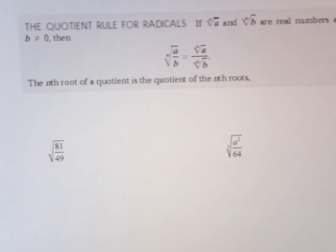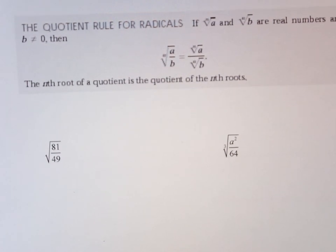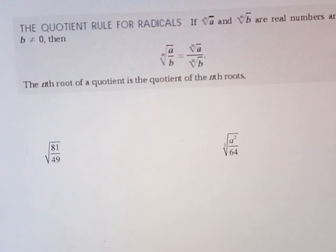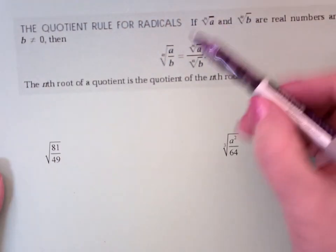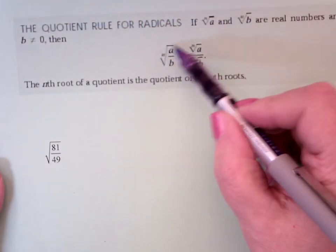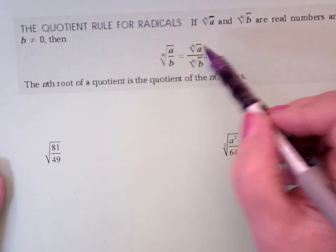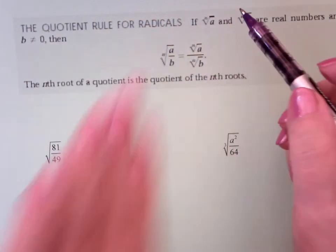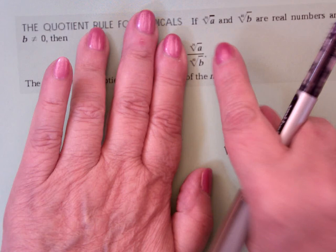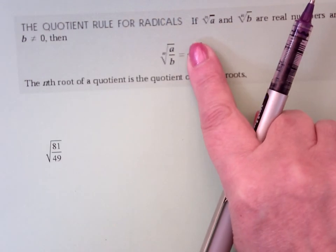With the multiplication rule for radicals, this is the quotient rule for radicals. What that says is this: if I have the nth root of a quotient, I can write it in two pieces. That also means if it's in two pieces, I can write it in one piece.